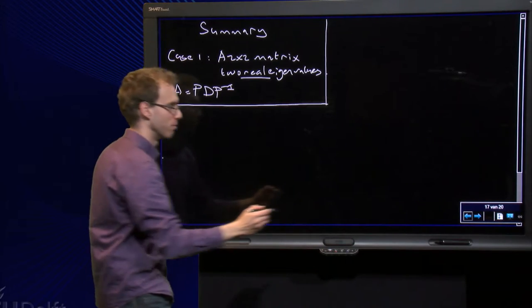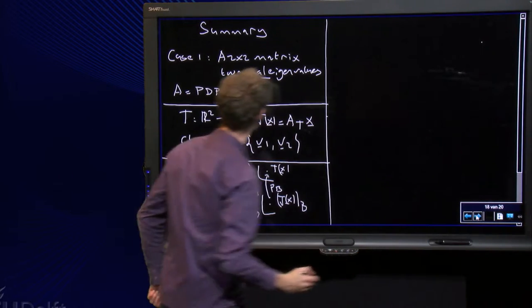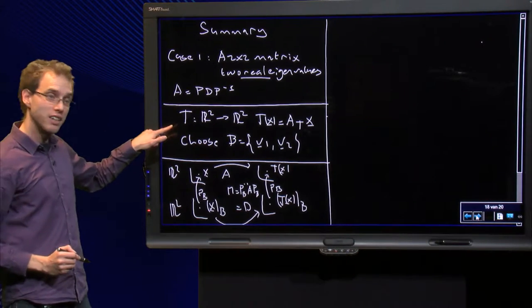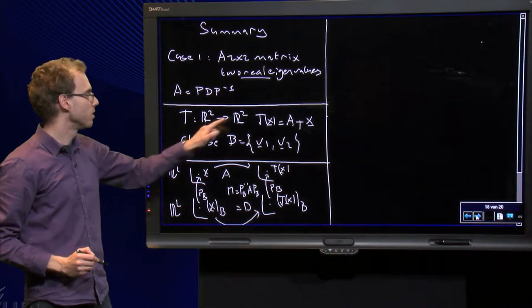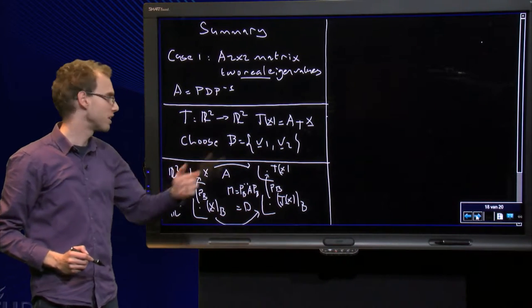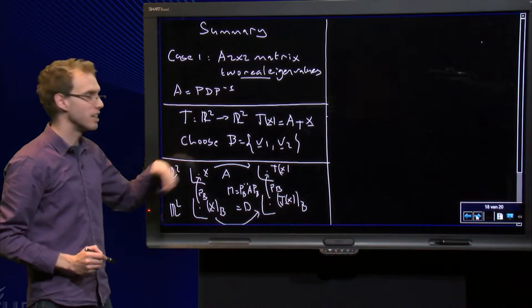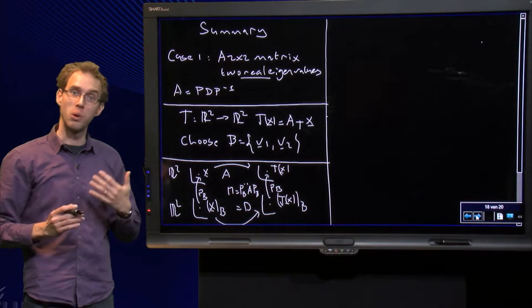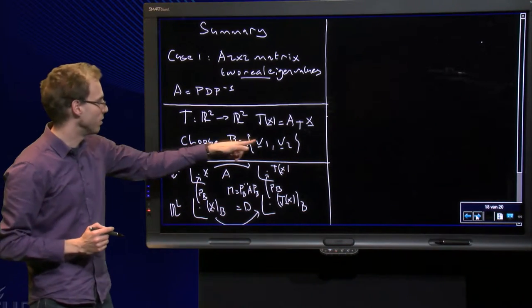How does that look as a transformation? We can find the linear transformation T from R2 to R2, where T is A times X. Then we can choose as a new basis the basis of the two eigenvectors of A, V1 and V2.